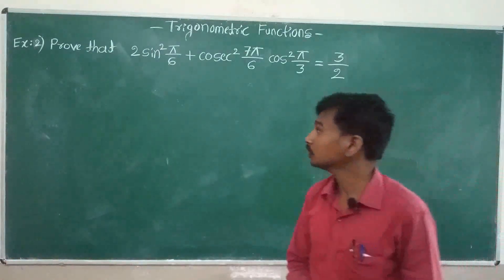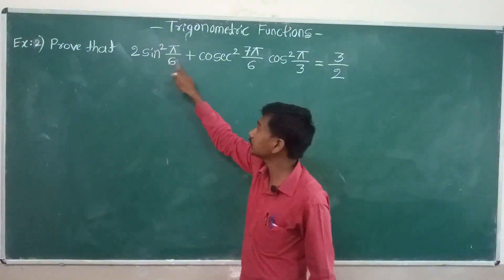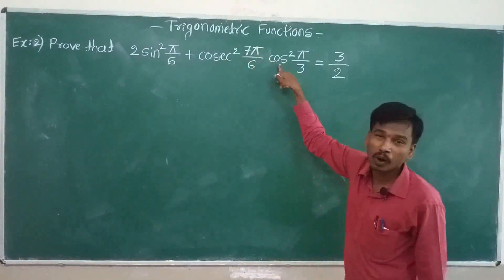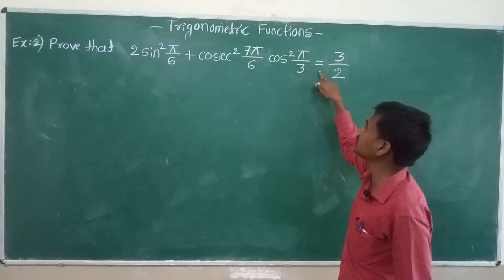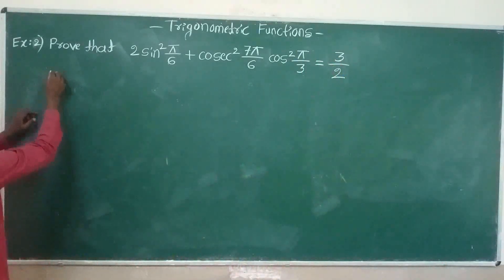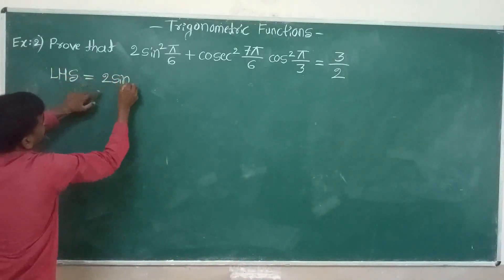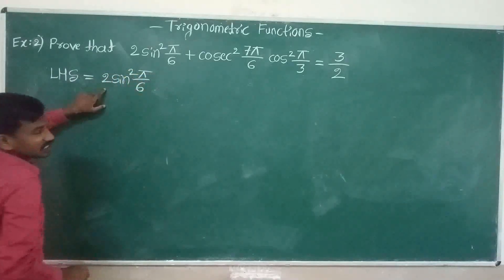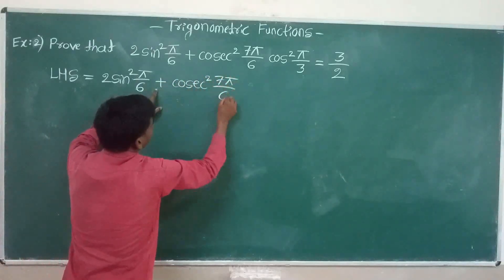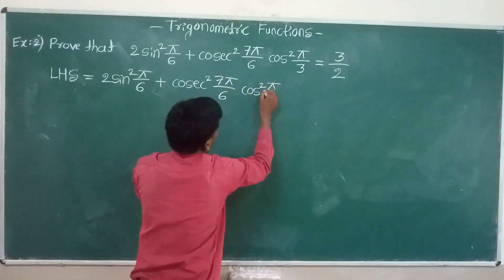Example number 2: prove that 2 into sin squared pi divided by 6, plus cos squared 7pi divided by 6, into cos squared pi divided by 3, is equal to 3 divided by 2. Here we take the LHS.